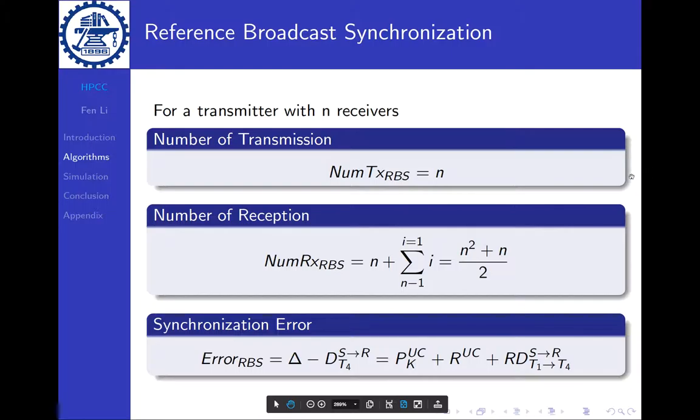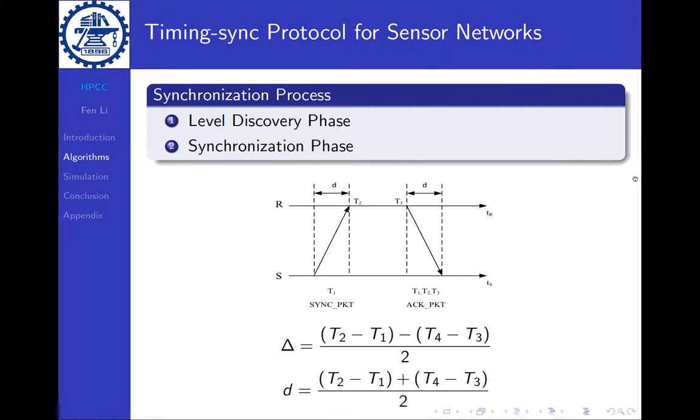Now let's look at another model called TPSN. It has two phases. The first phase is called the Level Discovery Phase, where a node is elected as a root node that starts flooding to construct a spanning tree. Every sensor node in the network will get a level ID from this tree.